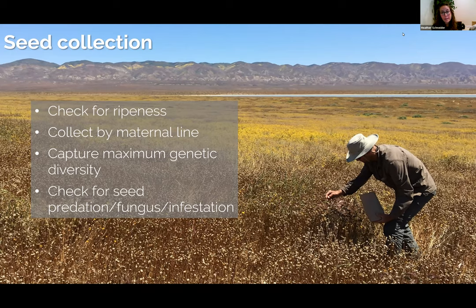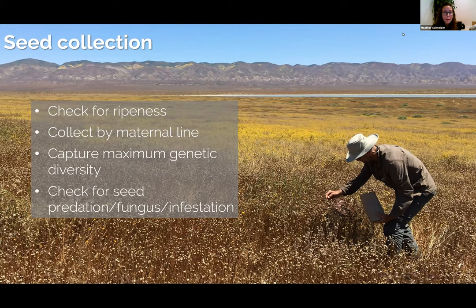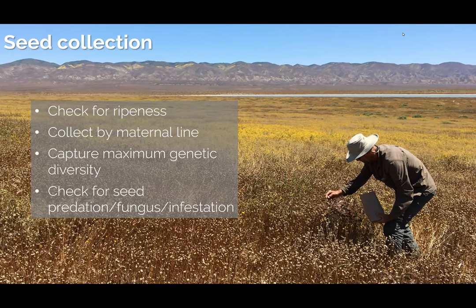When we're ready to collect seed we do tests in the field to make sure everything is ripe. You can use most of your senses — we're looking for things that are brown and feel dry, seeds that are hard and mature; if we cut them open they shouldn't be green on the inside. If it's a dry capsule sometimes you can hear the seeds shaking in the pod. One thing we do for rare plant collections that many people don't do with common species is collect by maternal line: we keep seeds from every individual plant separate. If we go into a population and collect from 50 plants, we leave with 50 envelopes. This lets us cover as much of the genetic and geographic footprint of a given population as possible to capture maximum genetic diversity.